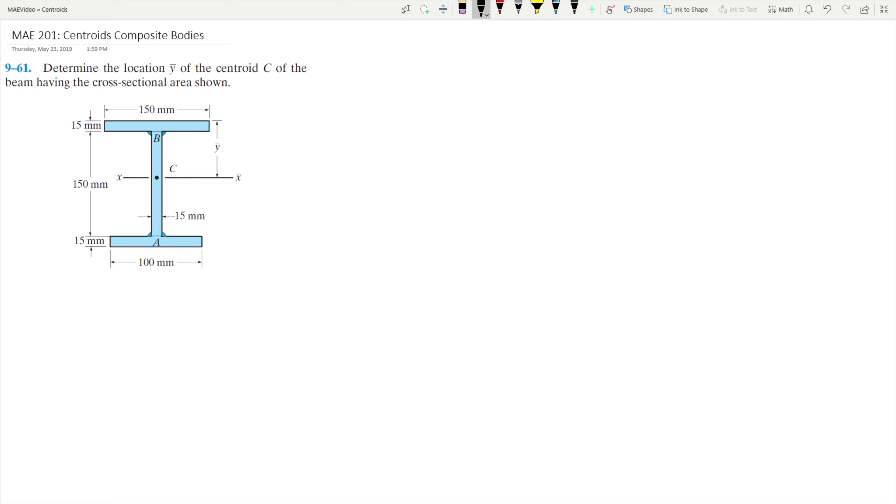This is going to be another statics video, and in this video I'm going to be covering a centroid example of a composite body. This is example 9-61 from the 14th edition of the statics book by Hibbler. We have a question that asks, determine the location y-bar of the centroid C of the beam having the cross-sectional area shown.